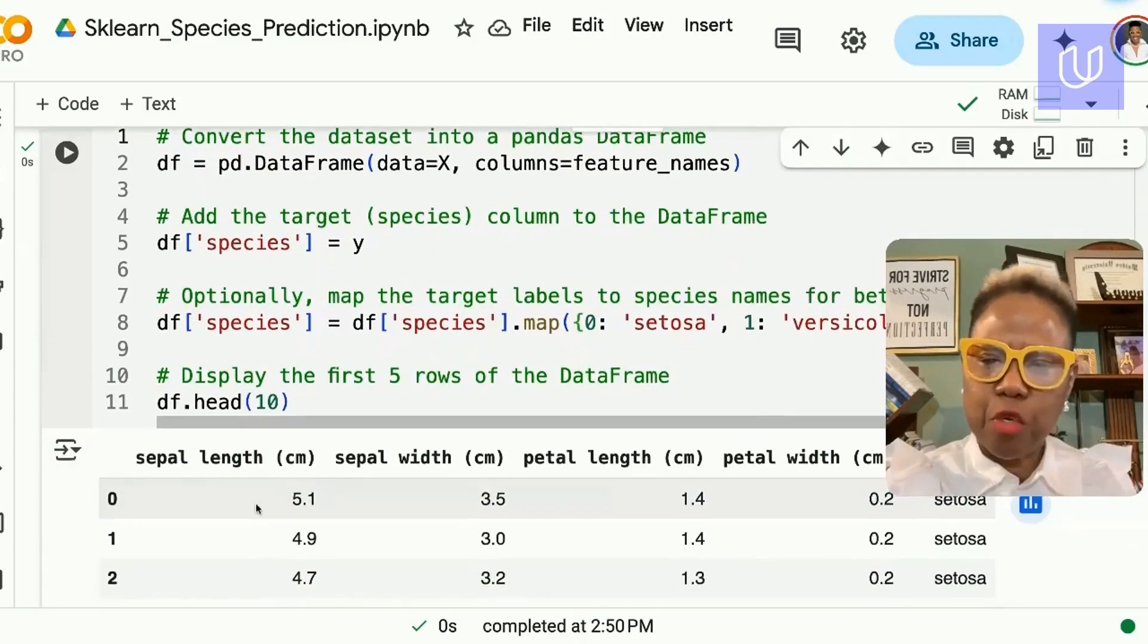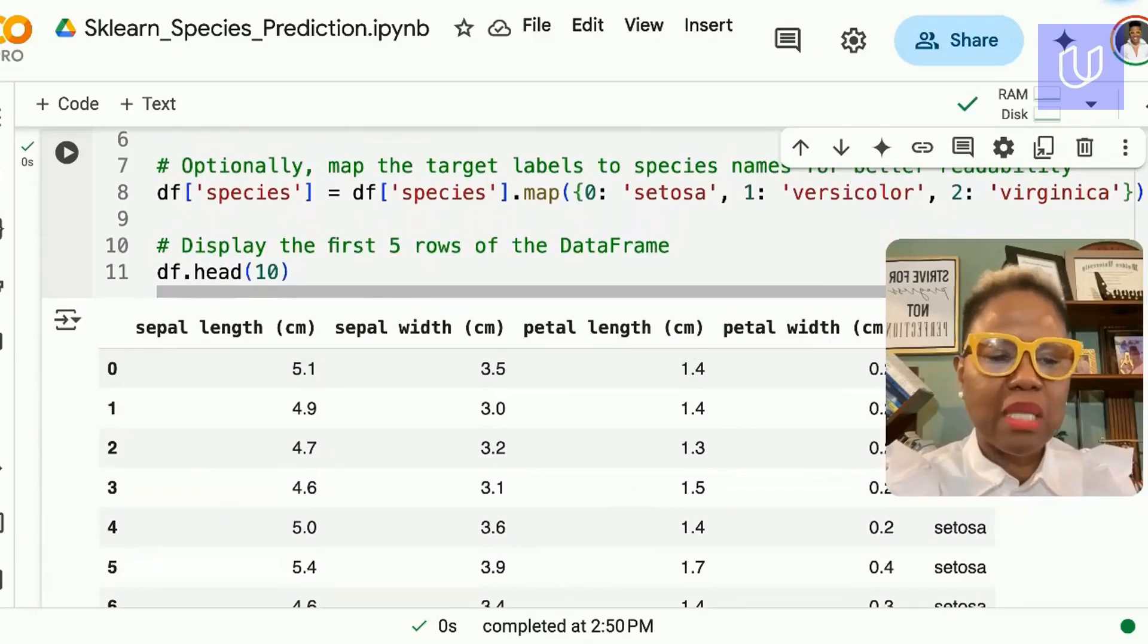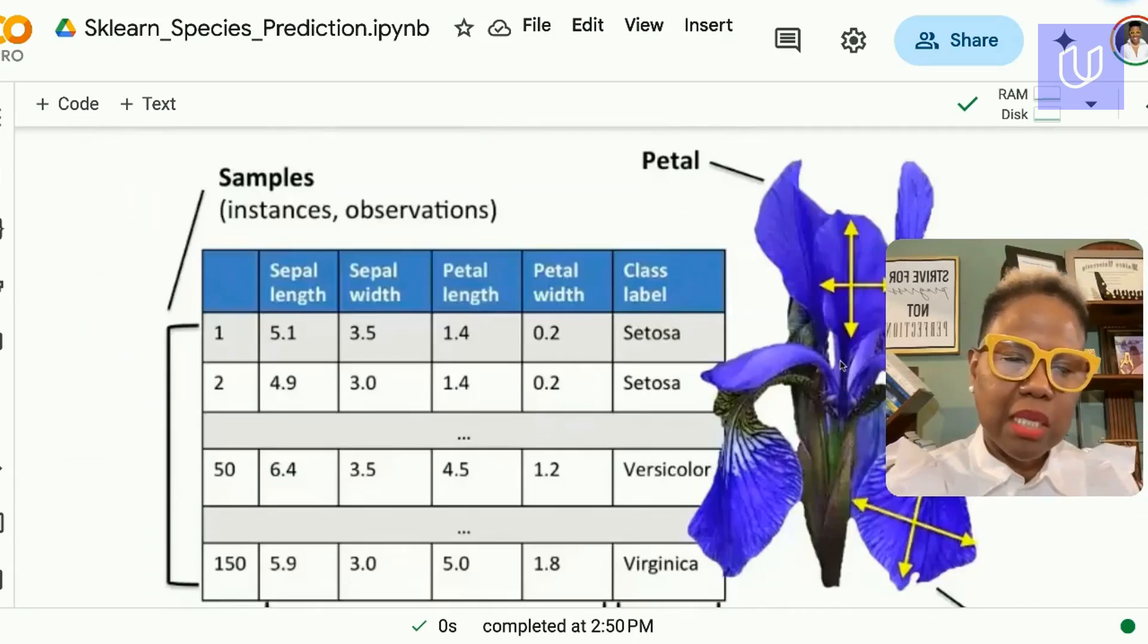And here we have our dataframe, the four features: sepal length, sepal width, petal length, petal width. And in the last column, we have the species, the target that we are going to predict. This is an example of the data. They measured the length and the width of the petal, also the width and the length of the sepal and recorded that along with the identification of the class or the species to which the flowers belong.